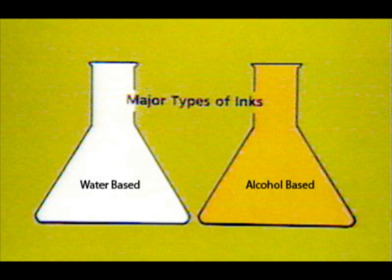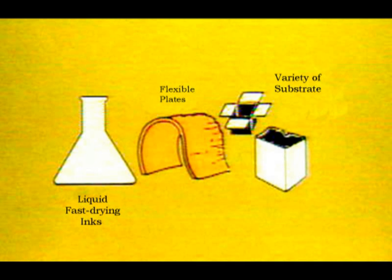The two major types of fluid inks used in flexography are water-based and alcohol-based. Alcohol-based inks are most often used to print on non-absorbent substrates such as film and foil. Water-based inks are most often used on absorbent material substrates such as paper and paperboard.